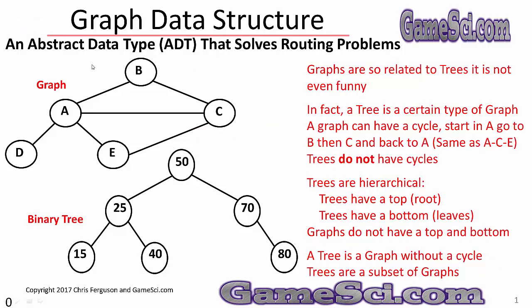The graph data structure is an abstract data type, or ADT, that solves routing problems. Graphs are so related to trees it's not even funny — in fact, a tree is a certain type of graph. A graph can have a cycle: start in A, go to B, then to C, and back to A. We've got the same cycle with A, C, E, back to A. Trees do not have cycles. Graphs do.